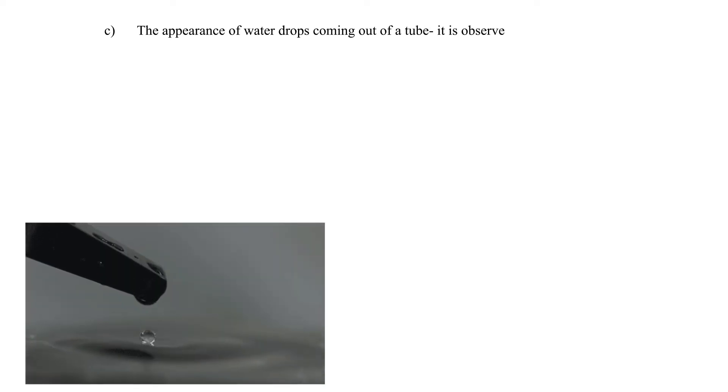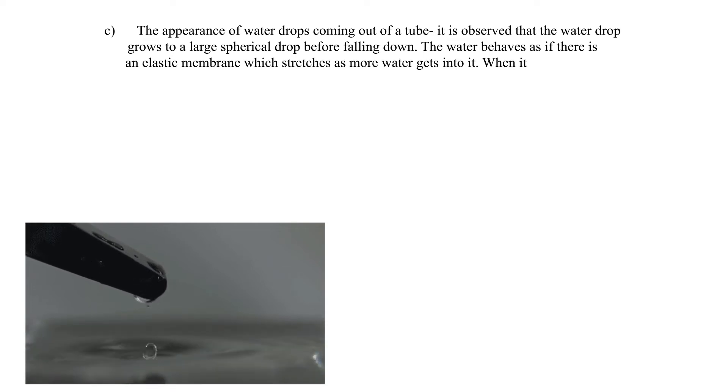C. The appearance of water drops coming out of a tube: It is observed that the water drop grows to a large spherical drop before falling down. The water behaves as if there is an elastic membrane which stretches as more water gets into it. When it cannot hold any more water, it falls.